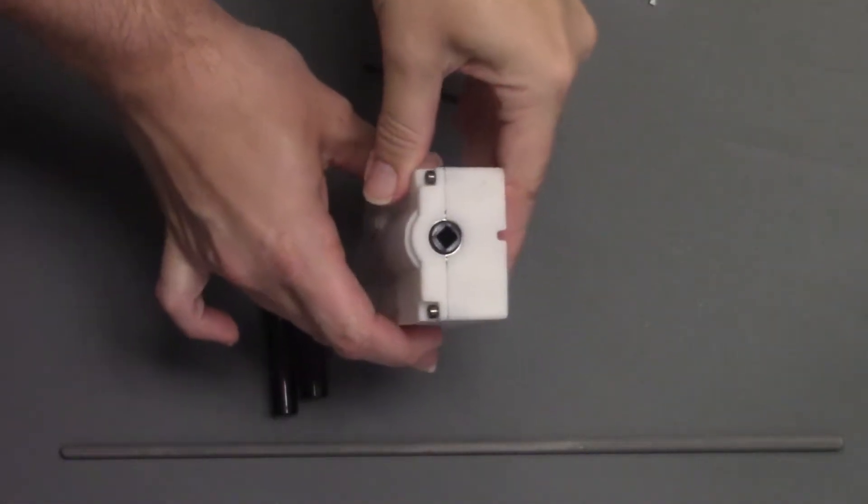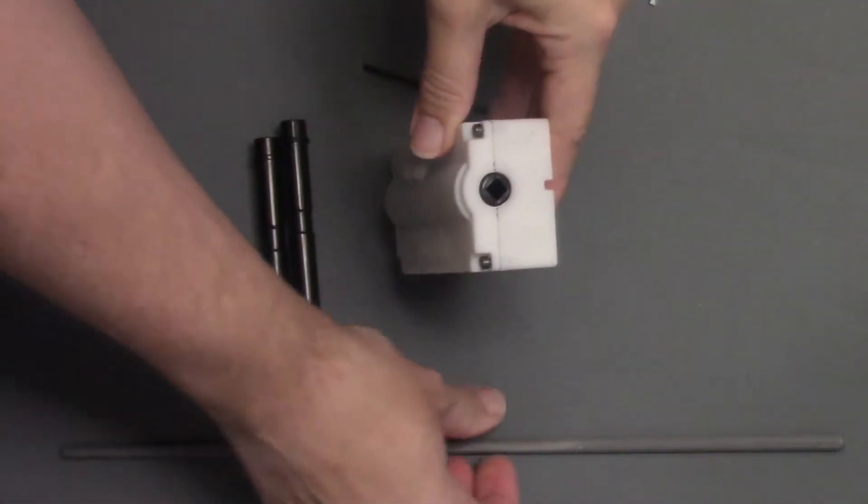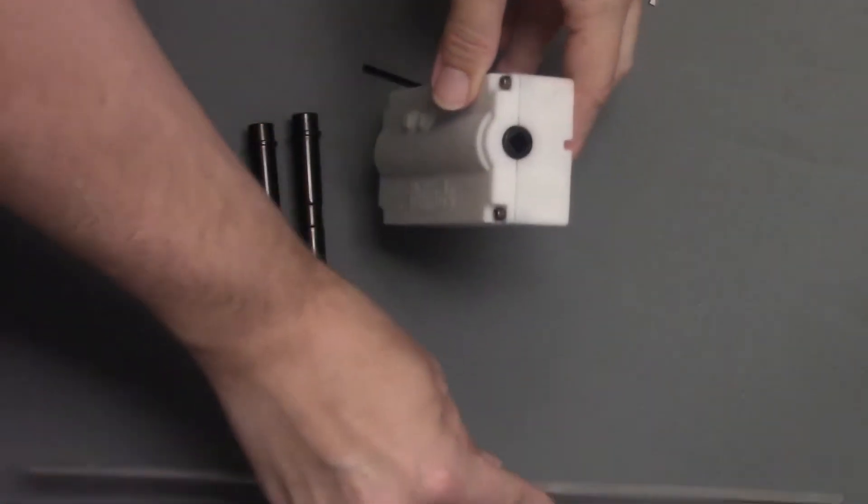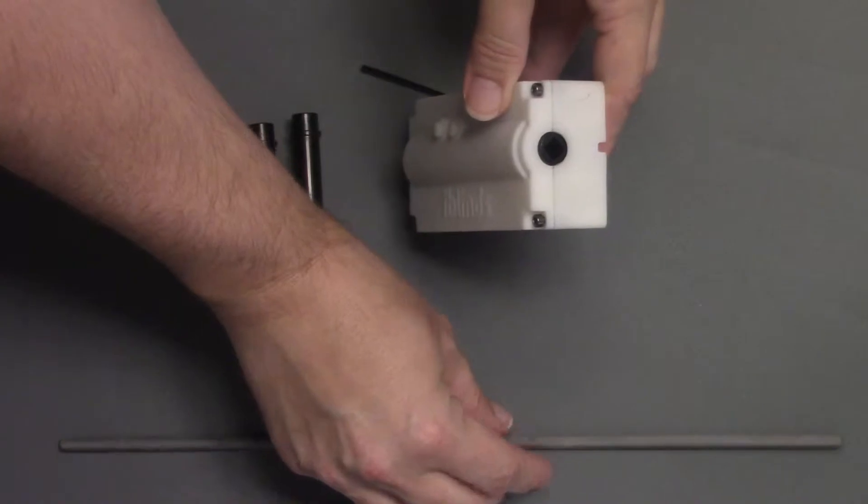Changing your iBlinds tilt shaft is easy. Start by gathering your iBlinds motor, hex wrench, and the correct tilt shaft for your tilt rod's size and shape.